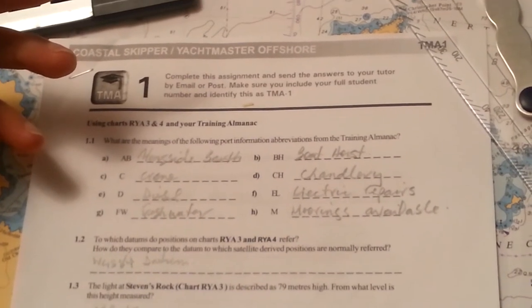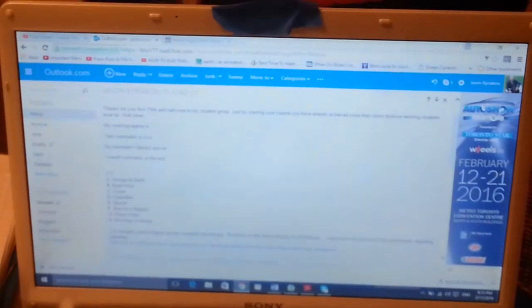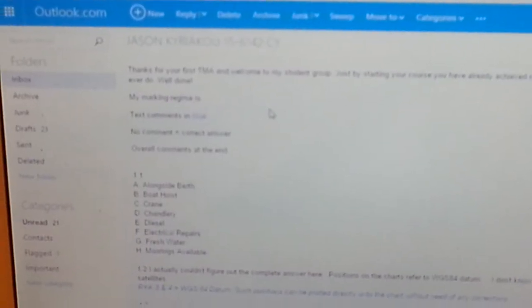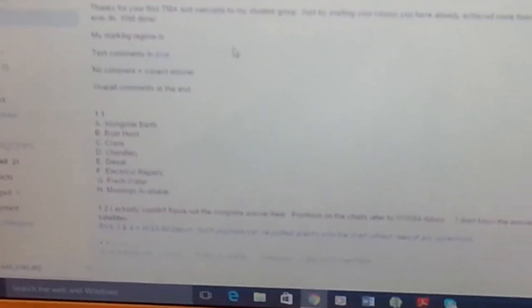So I'm looking at my laptop here, looking at the email. She's indicating that his comments are going to be in blue. If there are no comments it means it's a correct answer, and he'll give the overall comments at the end.